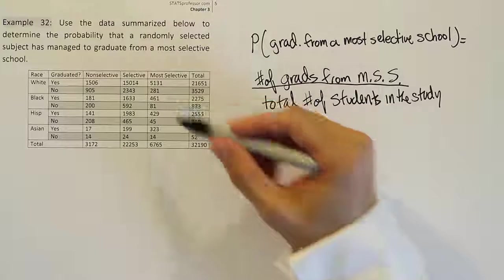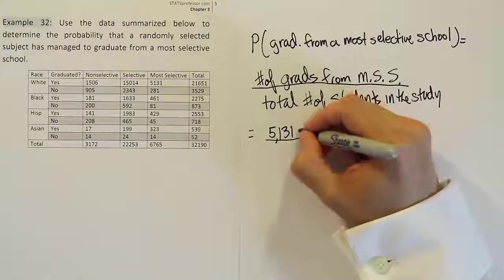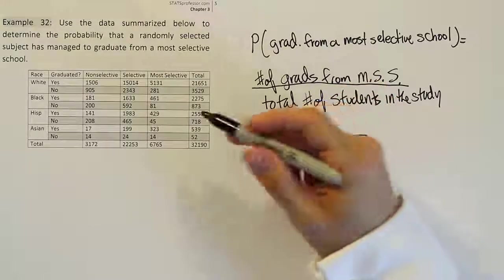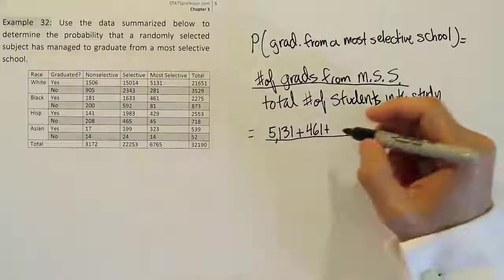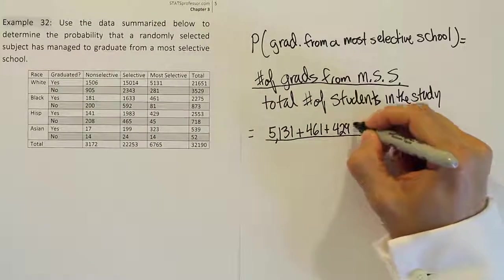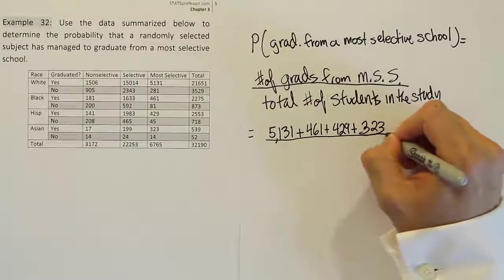So the number of grads is going to be 5131, which is basically the white students who graduated from most selective schools. Then black students, 461 graduated from most selective schools, 429 Hispanic students, and 323 Asian students.